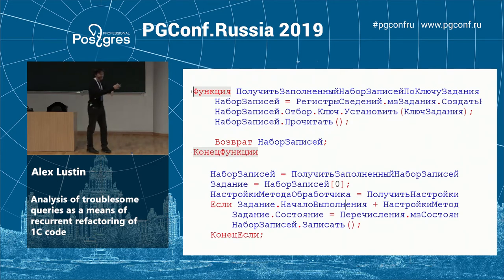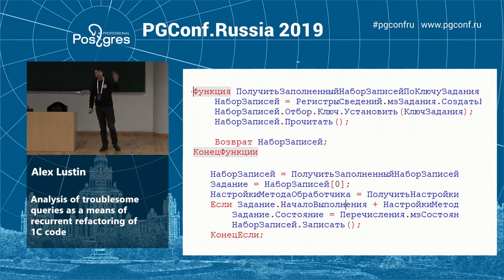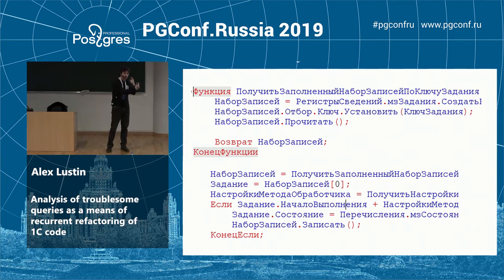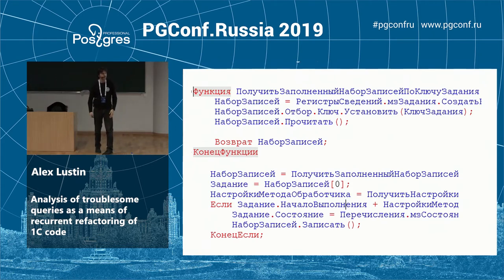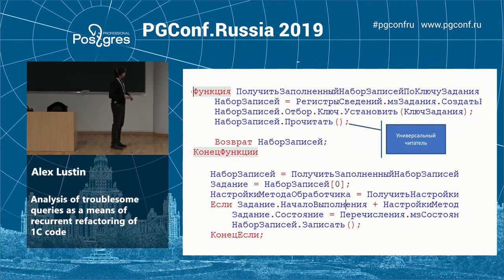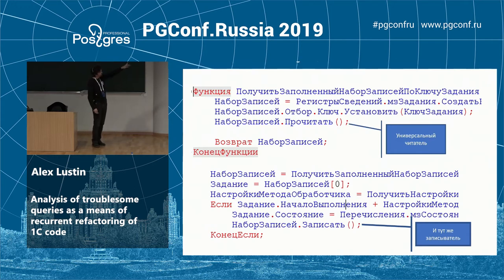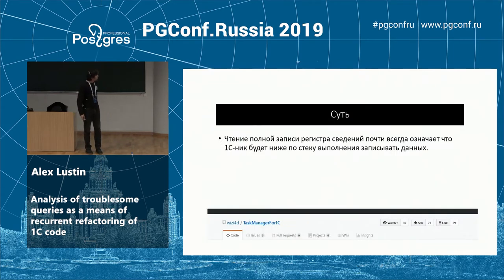So what is it? This is universal code. We get an abstract object, a set of records. After that we select the first record. I frequently see the zero index in code and get frustrated by it. After that, we have a cycle of this record — one field is changed and this information is re-recorded. This is done 26 million times per day. This is a universal reader and universal writer — one module, one stack without any constant transmission.